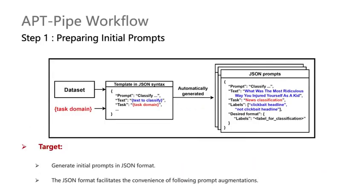Overall, APTPipe constitutes three steps. Step 1 involves determining the task domain of the dataset, followed by APTPipe generating initial prompts for each text in JSON format. This facilitates subsequent prompt augmentations.